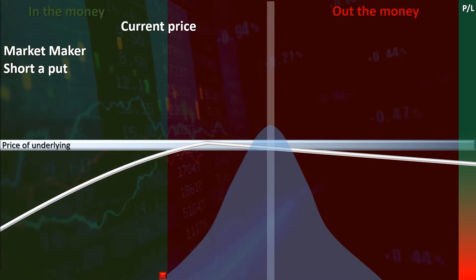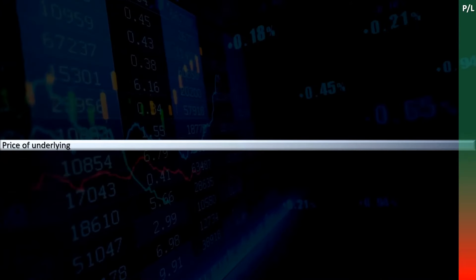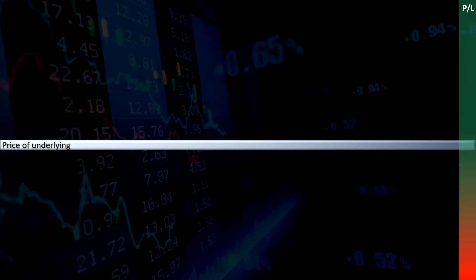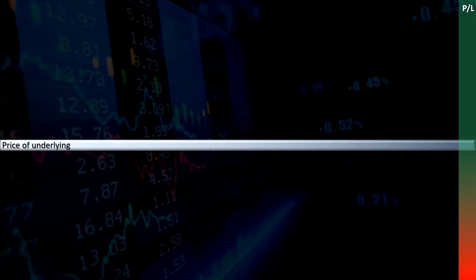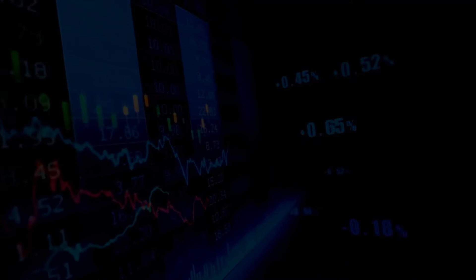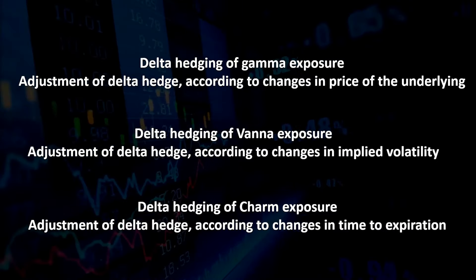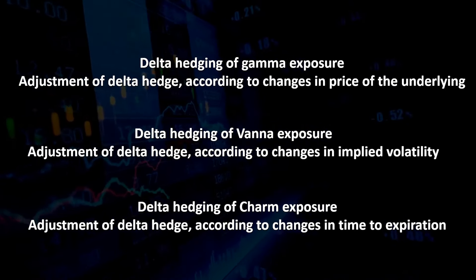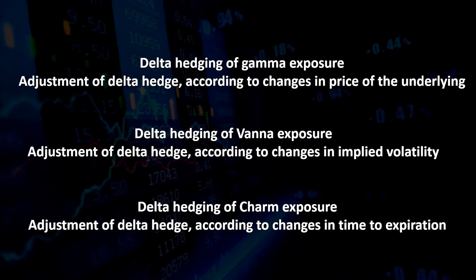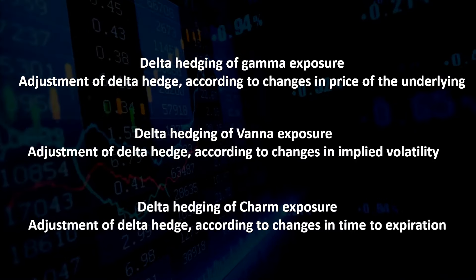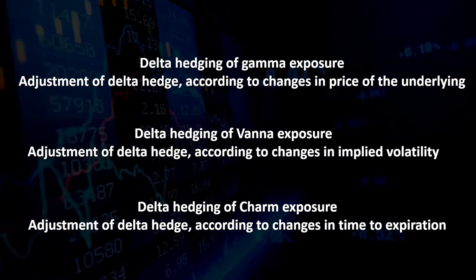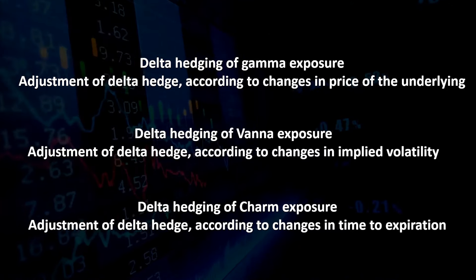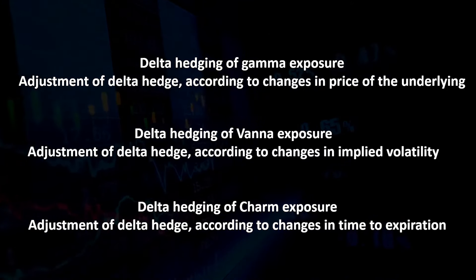Once the options expire however, this constant bidding for stock by market makers is taken out of the market, leaving it potentially vulnerable to large changes in price. In markets that are dominated by the use of options, knowledge of how market makers must delta hedge their Vanna and Charm exposures can be taken advantage of by investors to identify the likely effect that market makers will have on prices at particular times and in particular volatility environments.